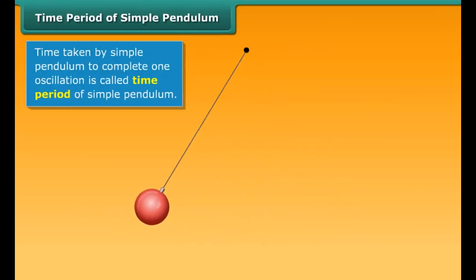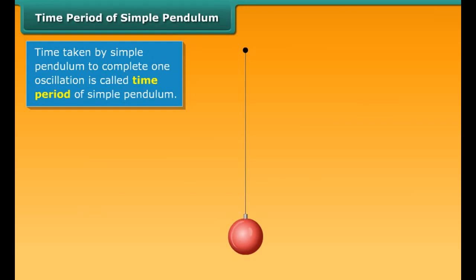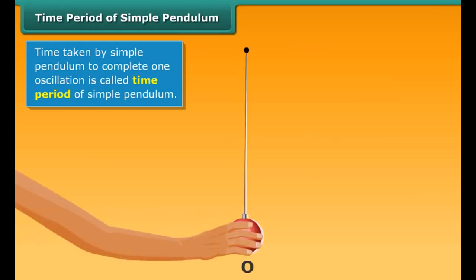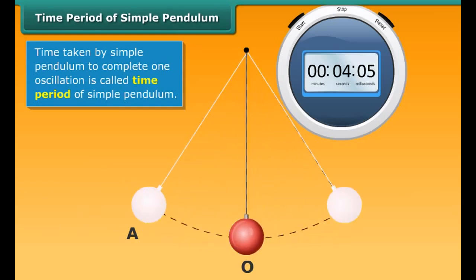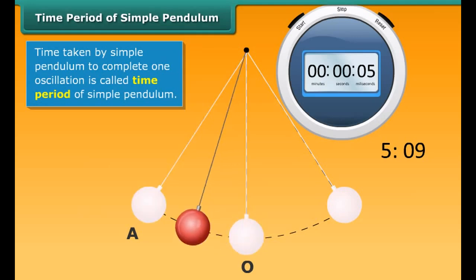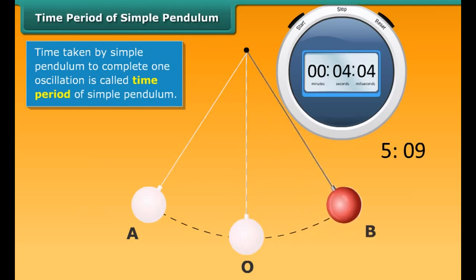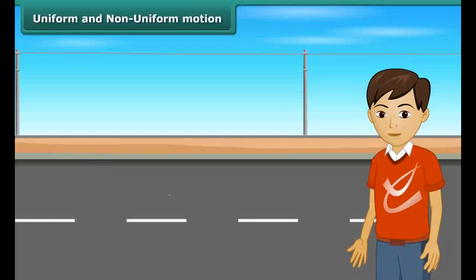The time taken by the pendulum to complete one oscillation is called its time period. You can compute it with this simple exercise: take a simple pendulum, let it come to rest, and identify the equilibrium position O on the ground below. Take the bob to one extreme position A and mark it. Start a stopwatch and release the bob at the same time. When the bob comes back to extreme position A, note the time. Alternatively, start from equilibrium position O and note the time taken to complete one full oscillation — O to A, A to B, B to O. The time recorded is the time period of the simple pendulum.